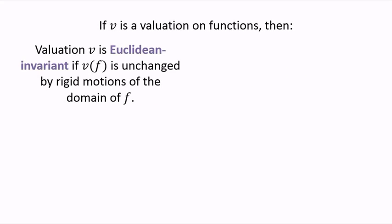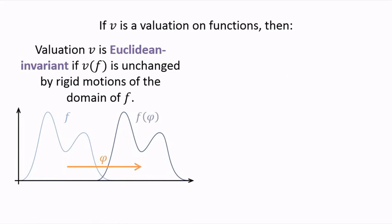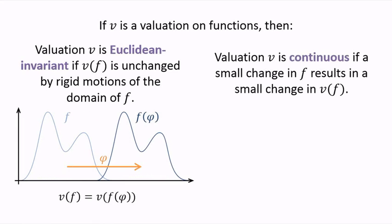A valuation on functions may be Euclidean invariant, meaning that v of f is unchanged by rigid motions of the domain of f. A valuation on functions may also be continuous, meaning that a small change in f results in a small change of v of f.